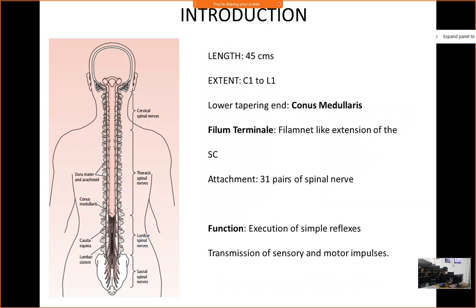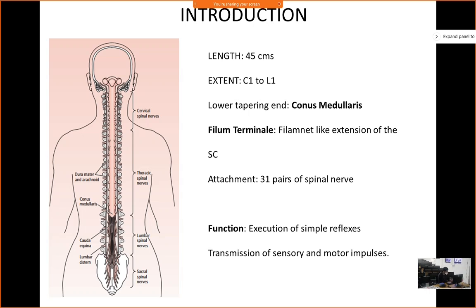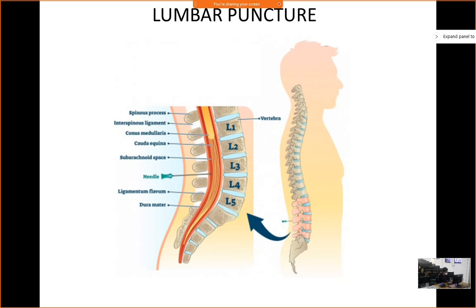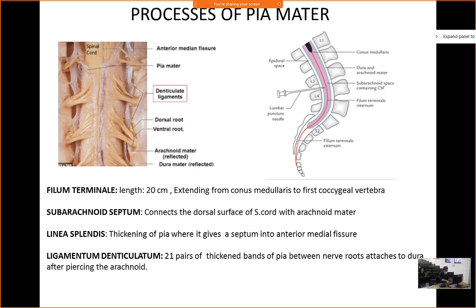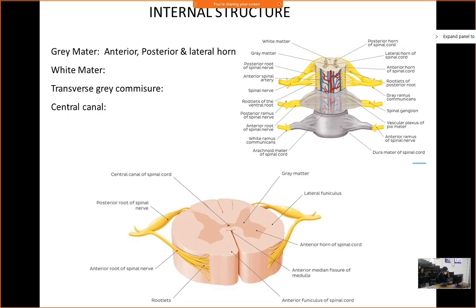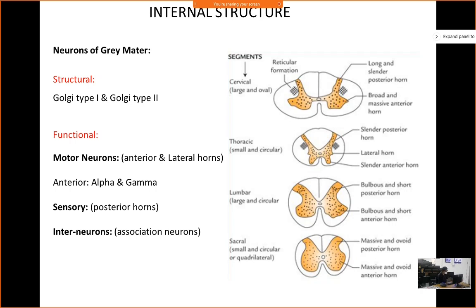Last class we covered the gross features of the spinal cord — its length, how many spinal nerves are attached, its coverings, the basis of lumbar puncture, and where it ends. The spinal cord ends at the L1 level. We also saw the processes of pia mater, the ligamentum denticulatum, external features, spinal segments, spinal enlargements, and the internal structure — the grey matter, white matter, anterior and posterior horns of grey matter, the lateral horns, and how cross sections differ between cervical, thoracic, lumbar and sacral segments.